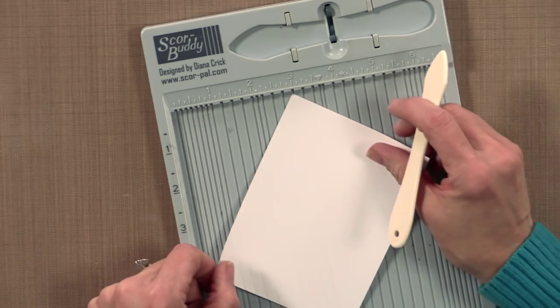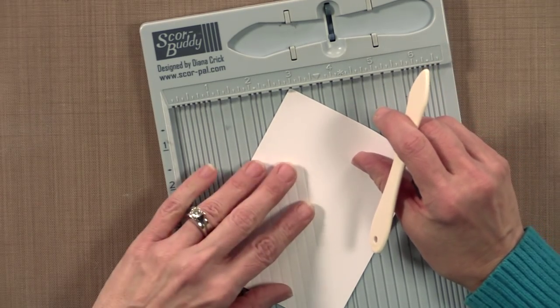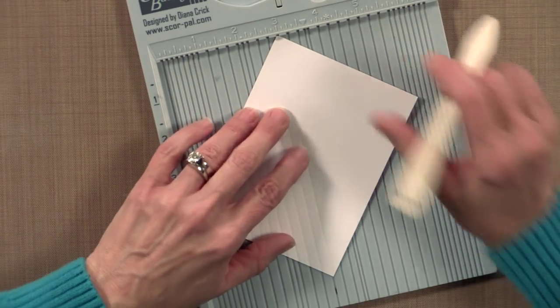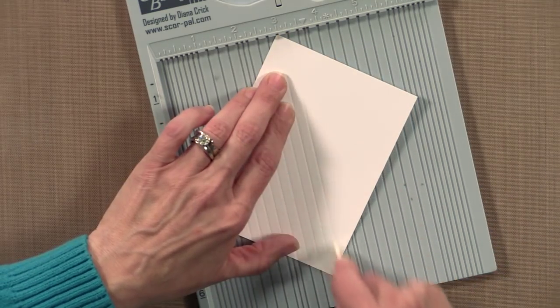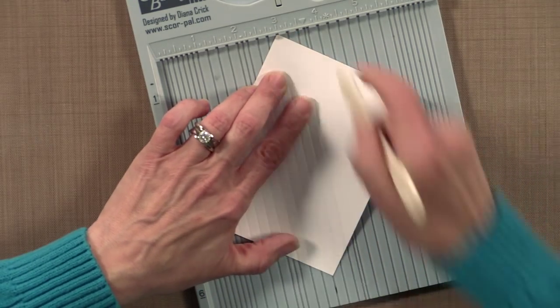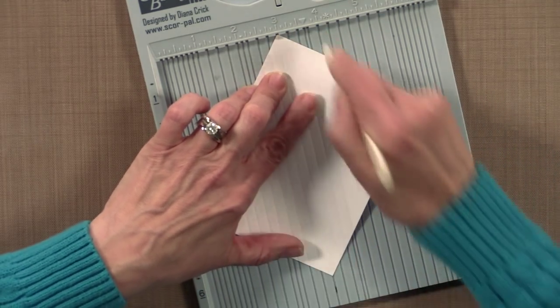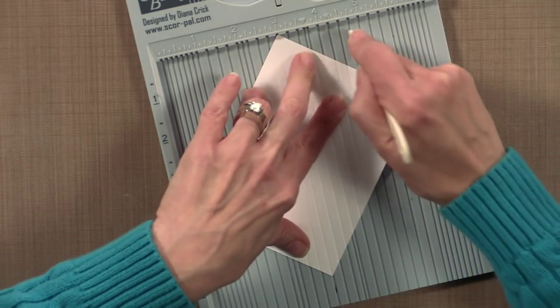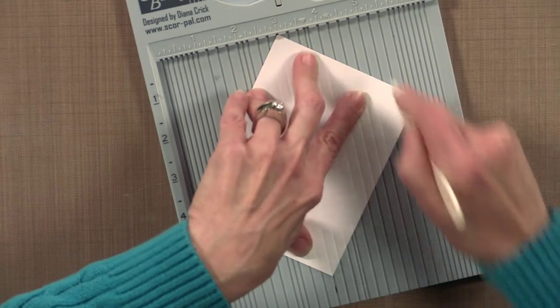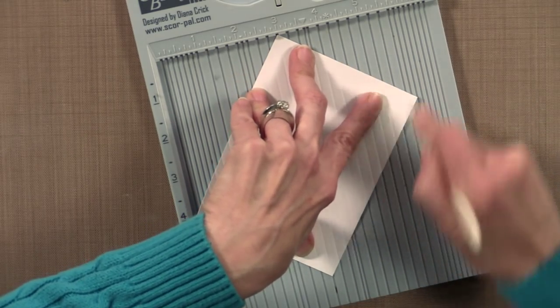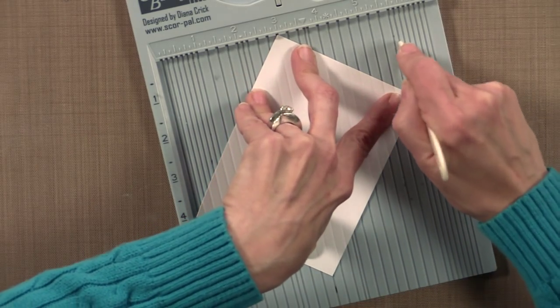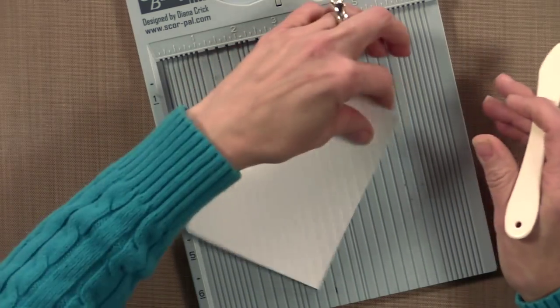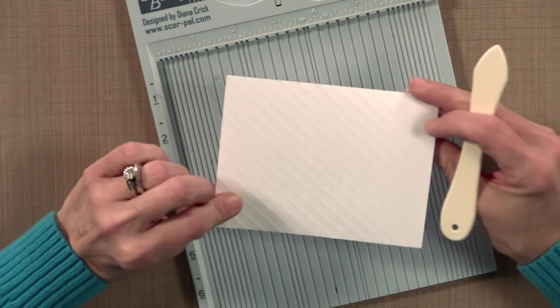Now I'm going to flip it and put it in the same position the other way. And once again, finish off all of those quarter of an inch marks. And this really does take the place of an embossing folder. If you just don't have the right folder, or maybe you're stamping somewhere with friends and you brought your score buddy but you didn't want to bring your embossing folders and your embossing machine.